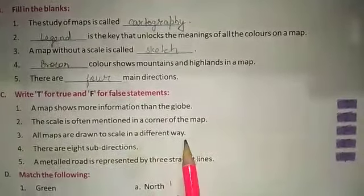3. All maps are drawn to scale in a different way. False. In a same way. It is a false statement. Write F. 4. There are 8 sub-directions. False. 5. A metal road is represented by 3 straight lines. False.